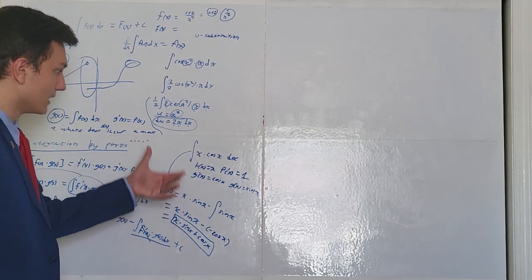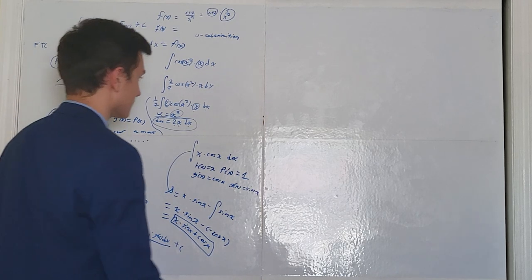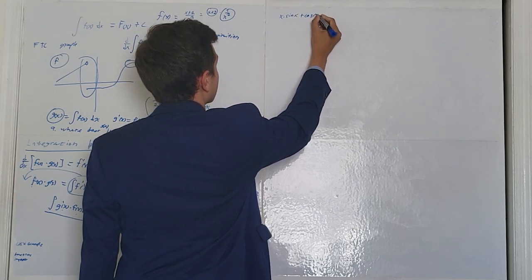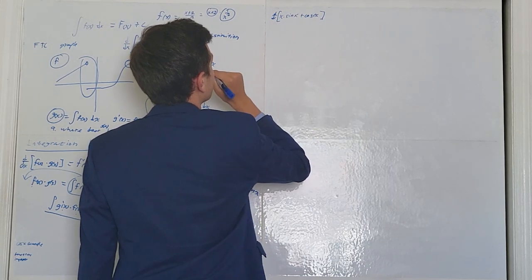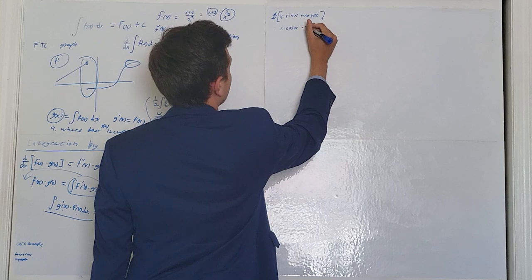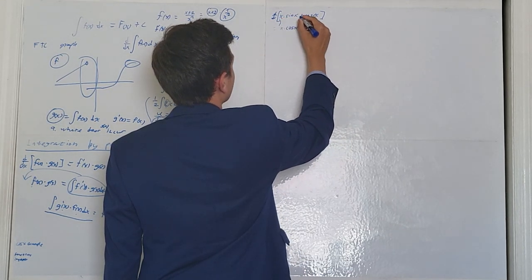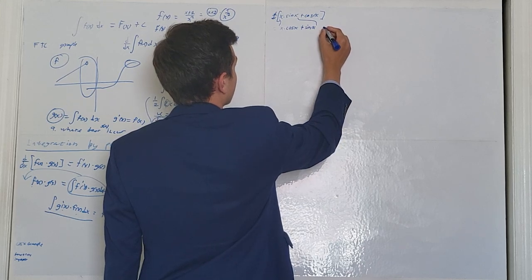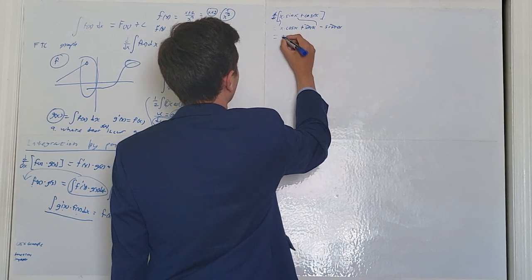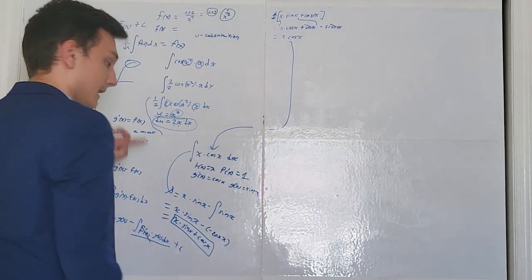It's always a good idea to check by differentiating. Taking the derivative of x times sine x plus cosine x: using product rule on the first term gives x times cosine x plus sine x, and the derivative of cosine x is negative sine x. The sine x terms cancel out, leaving x times cosine x, which is exactly the original integrand. That's integration by parts.